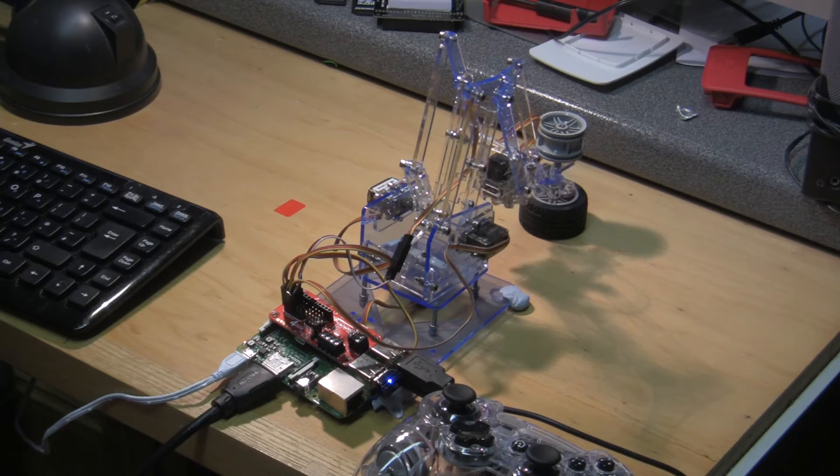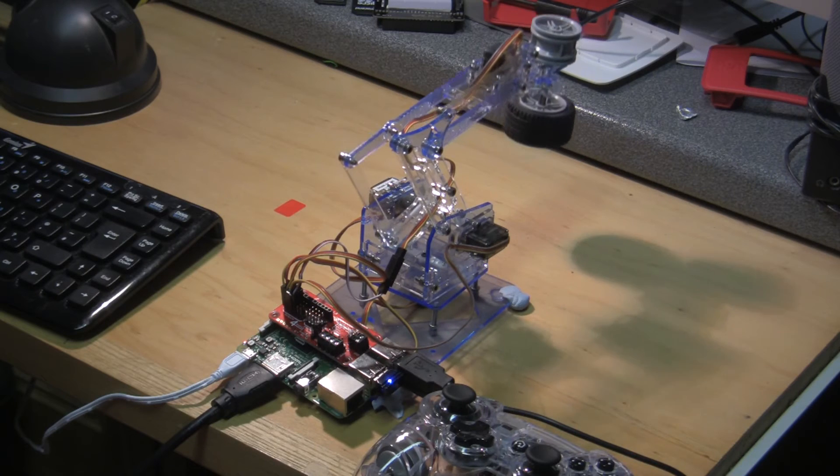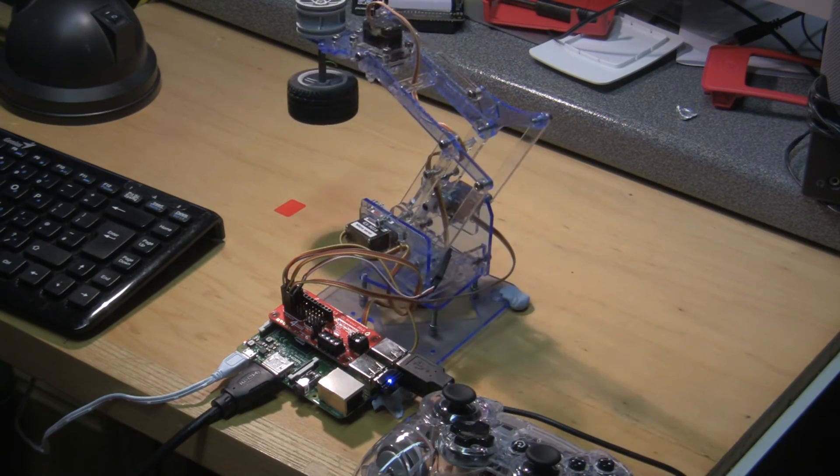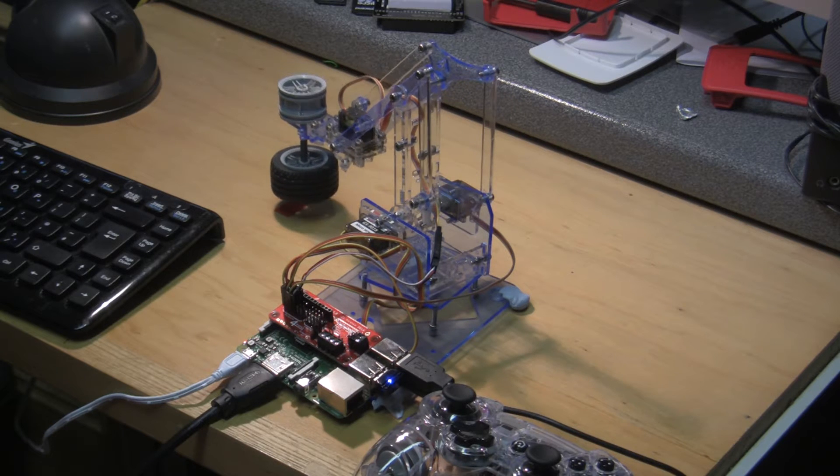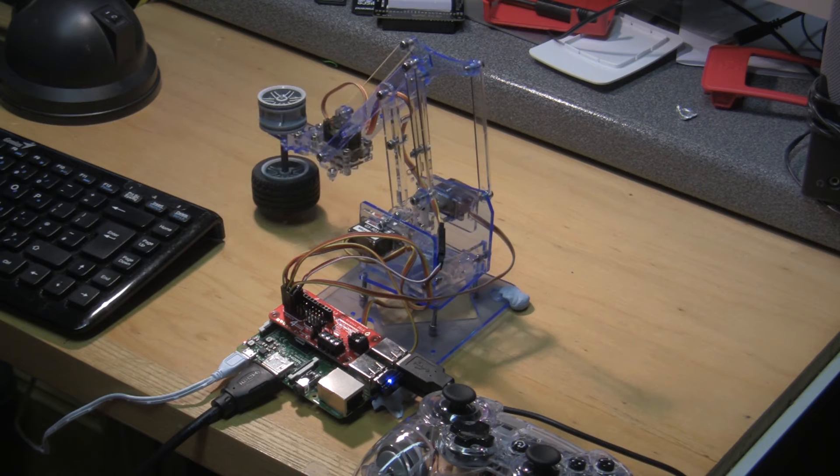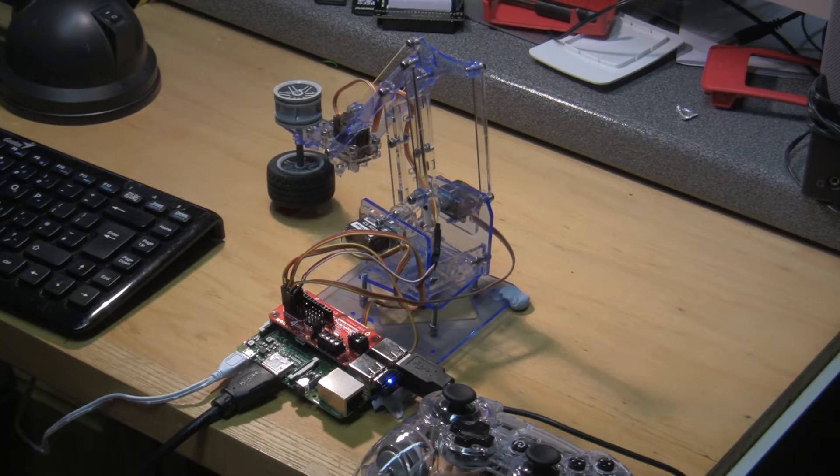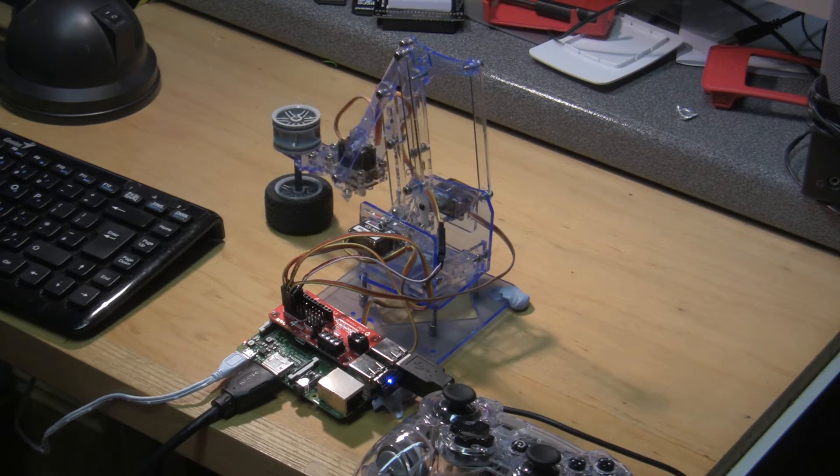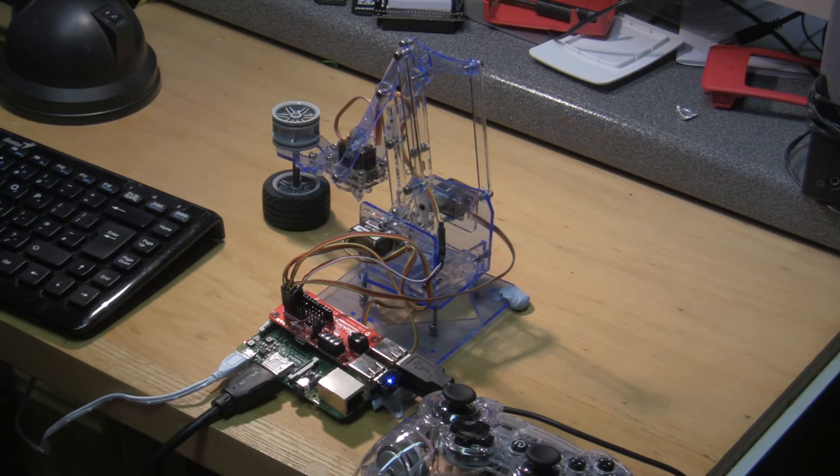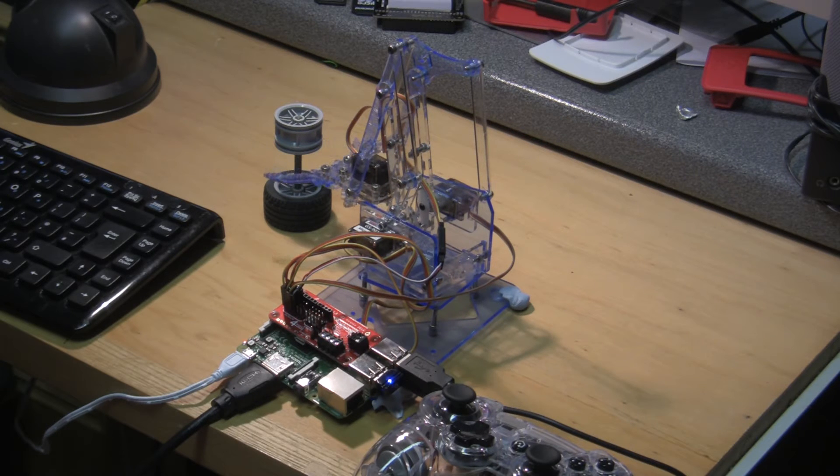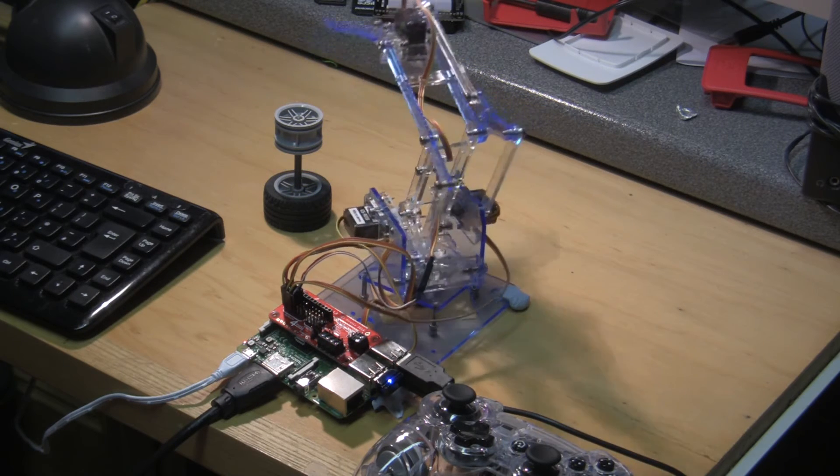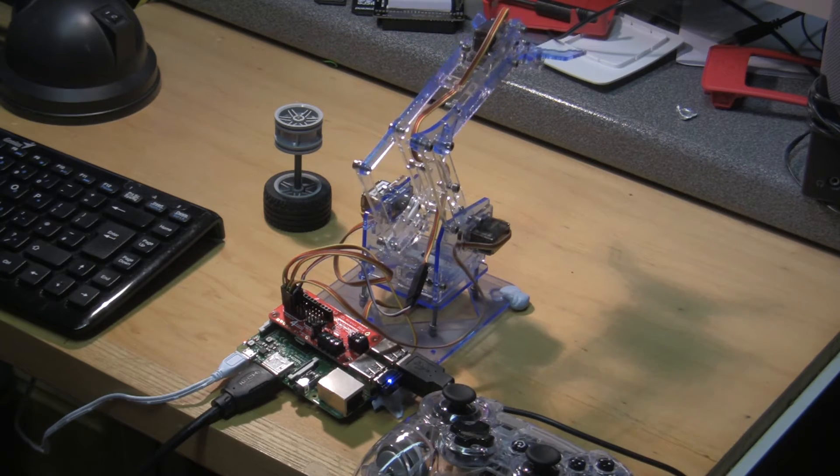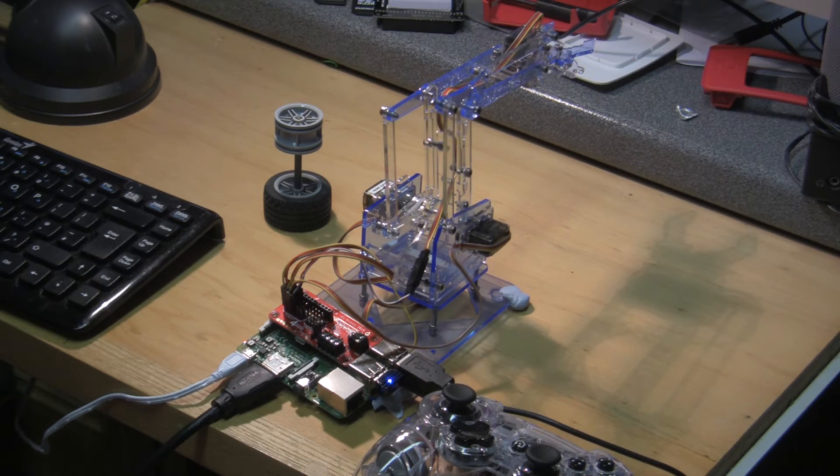We close the grip, pick it up, swing it round and try and put it back where it came from as best we can. Then we put the arm back to its central position. And that's the whole process terminated.